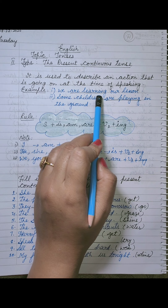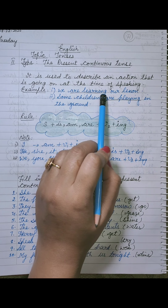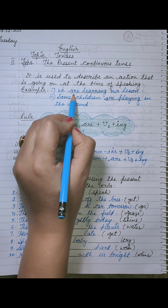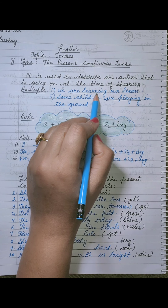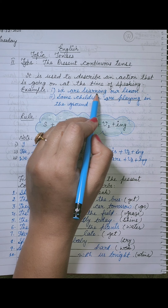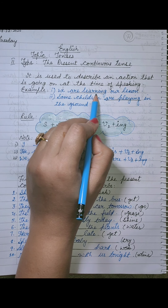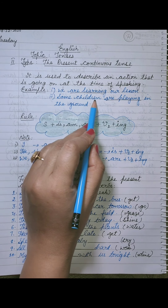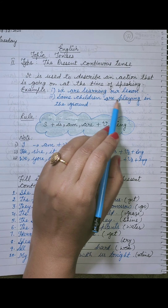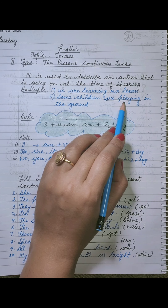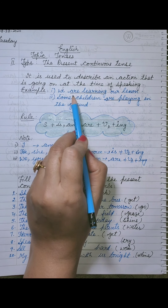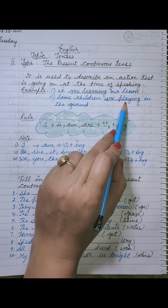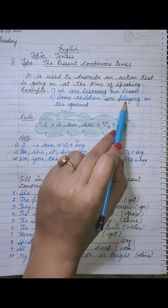With 'are', we used verb's first form plus ing. So 'we' is the subject, 'are' is the helping verb, and 'learning' is verb's first form plus ing — which is the present participle. In 'Some children are playing in the ground', 'some children' is the subject, 'are' is the helping verb, and 'playing' is verb's first form plus ing. Both sentences — 'are learning' and 'are playing' — show the present continuous tense.